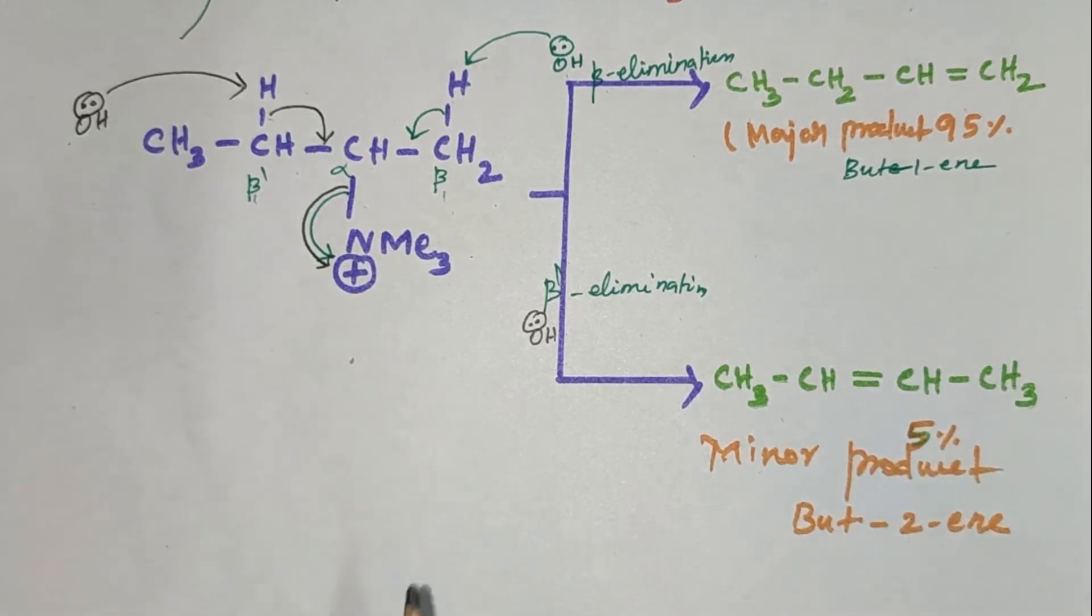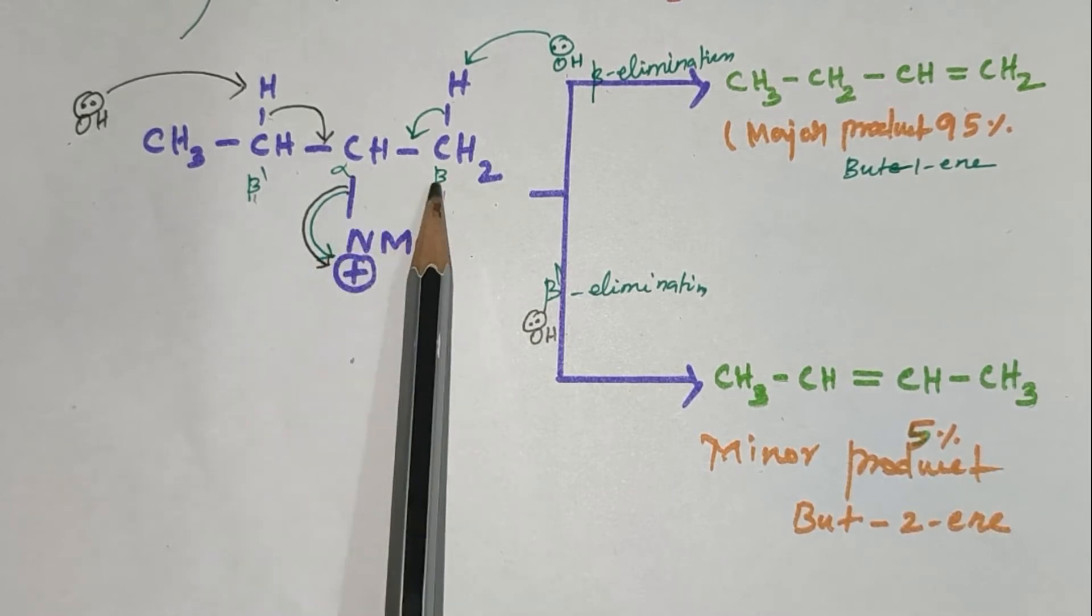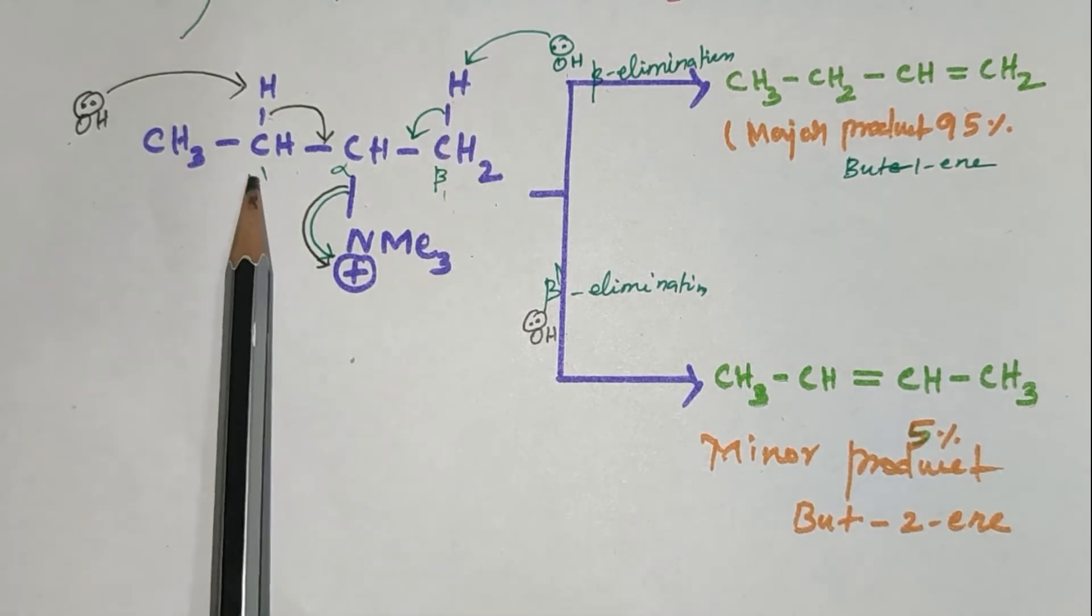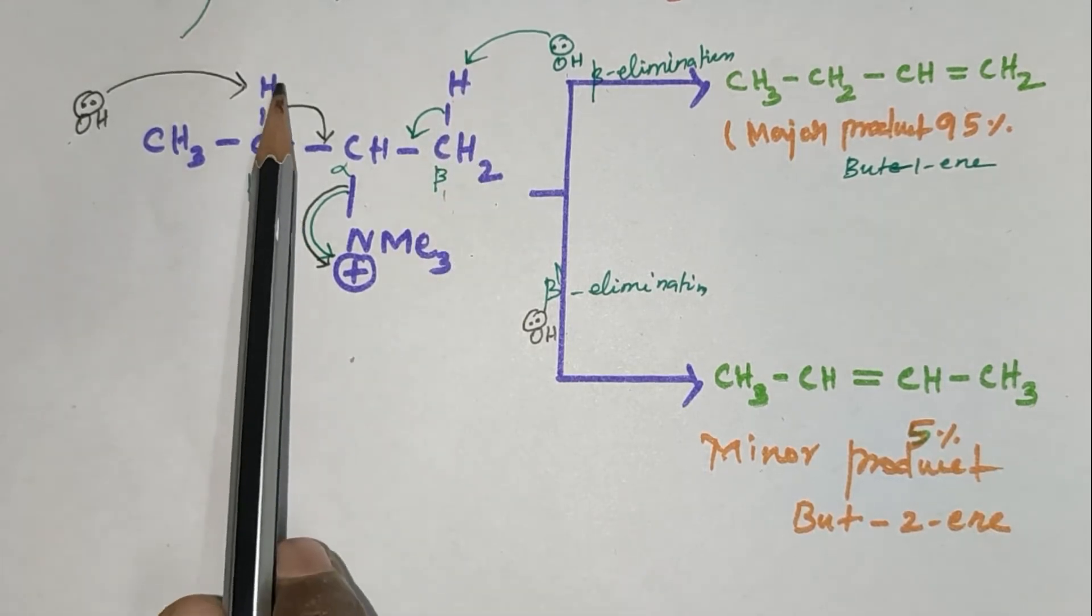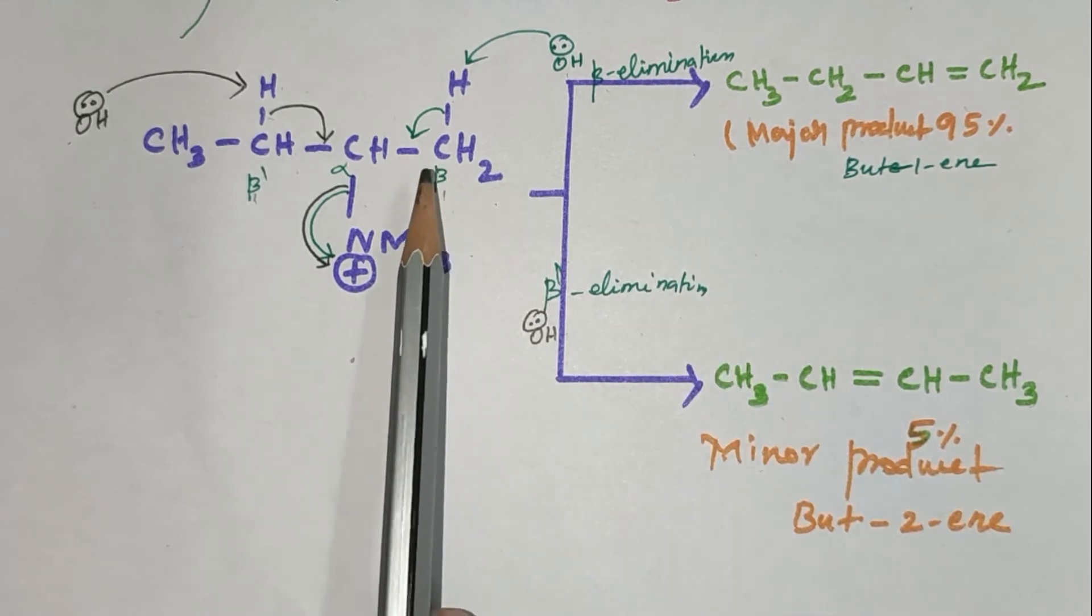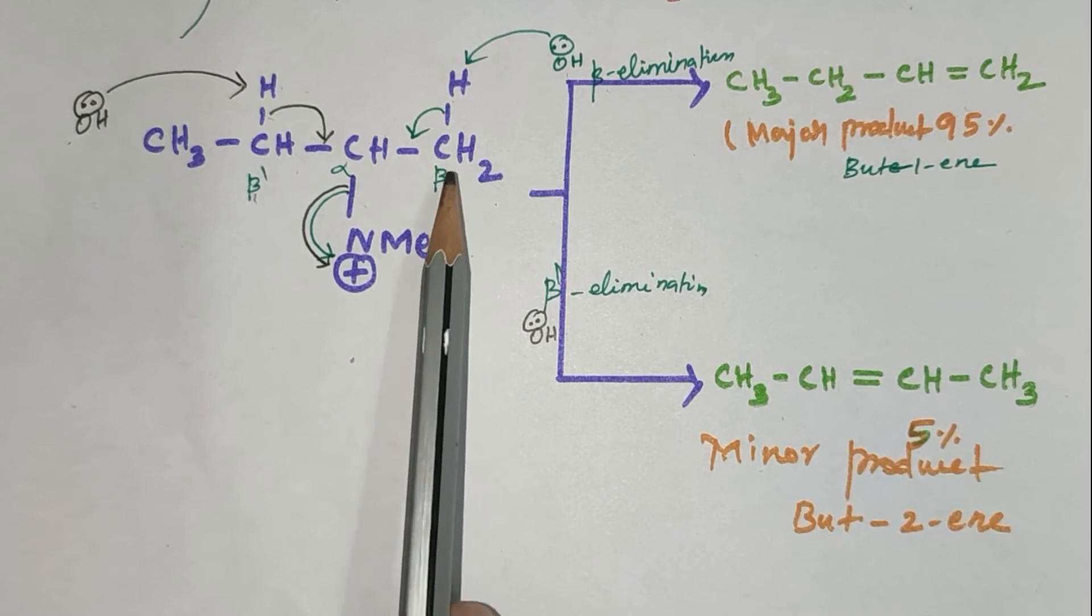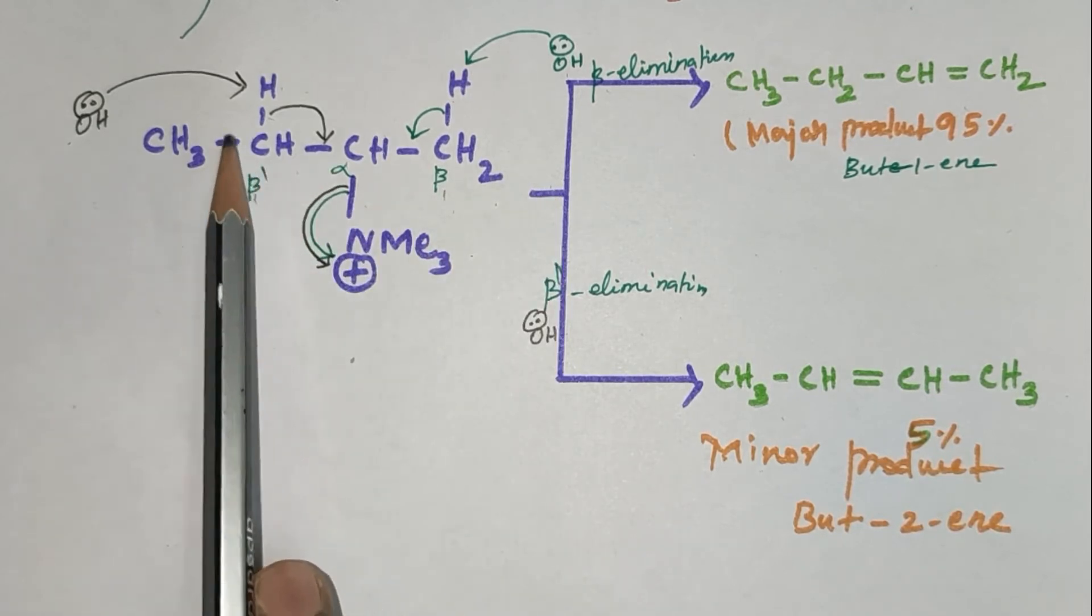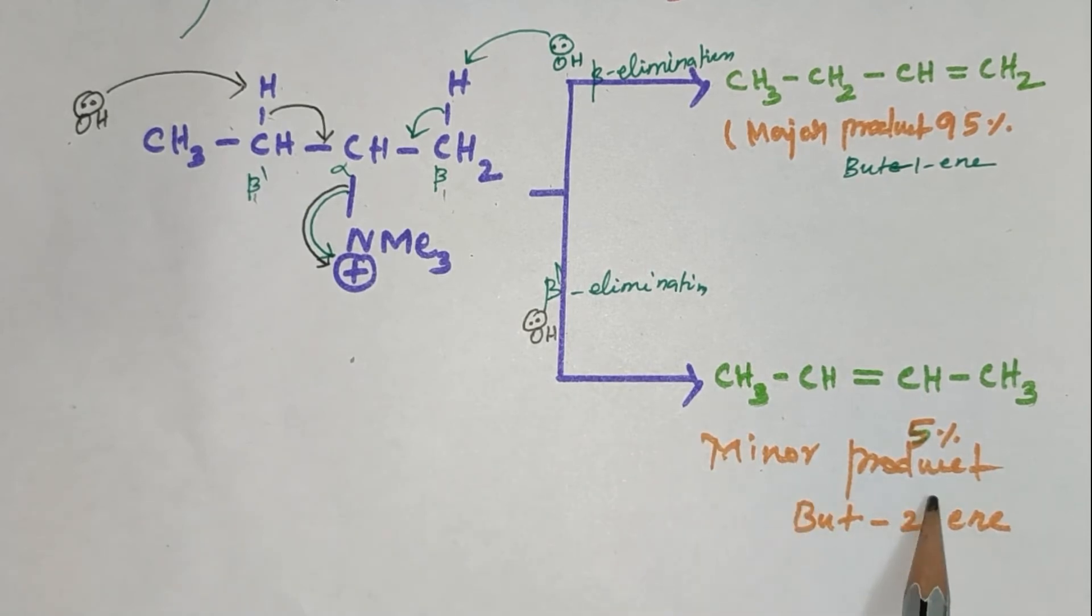Hofmann rule states that the major product is the least substituted alkene. E2 elimination and E1cb elimination follow Hofmann rule. In this compound, this beta contains 3 alpha hydrogens. Beta dash carbon contains 2 alpha hydrogens. The Hofmann major product is obtained only when the higher number of beta hydrogens will be eliminated. The lower number of beta hydrogens will be eliminated gives the minor product.